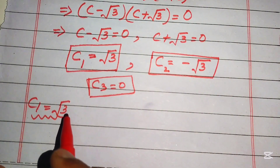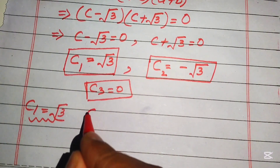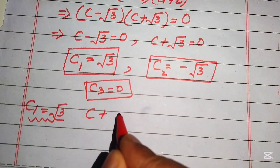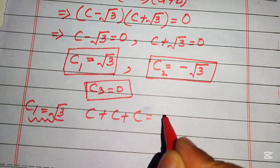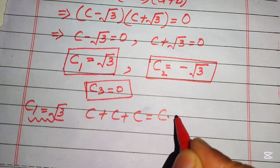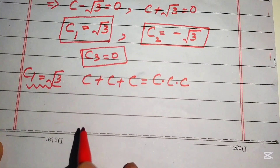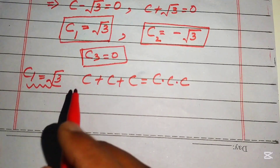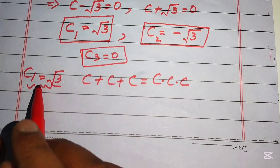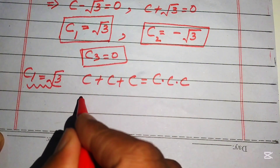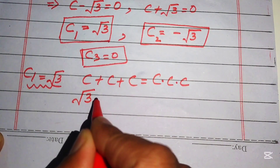The given equation is c plus c plus c equals c times c times c. We substitute c₁ equals square root of three on both sides, giving square root of three plus square root of three plus square root of three on the left.